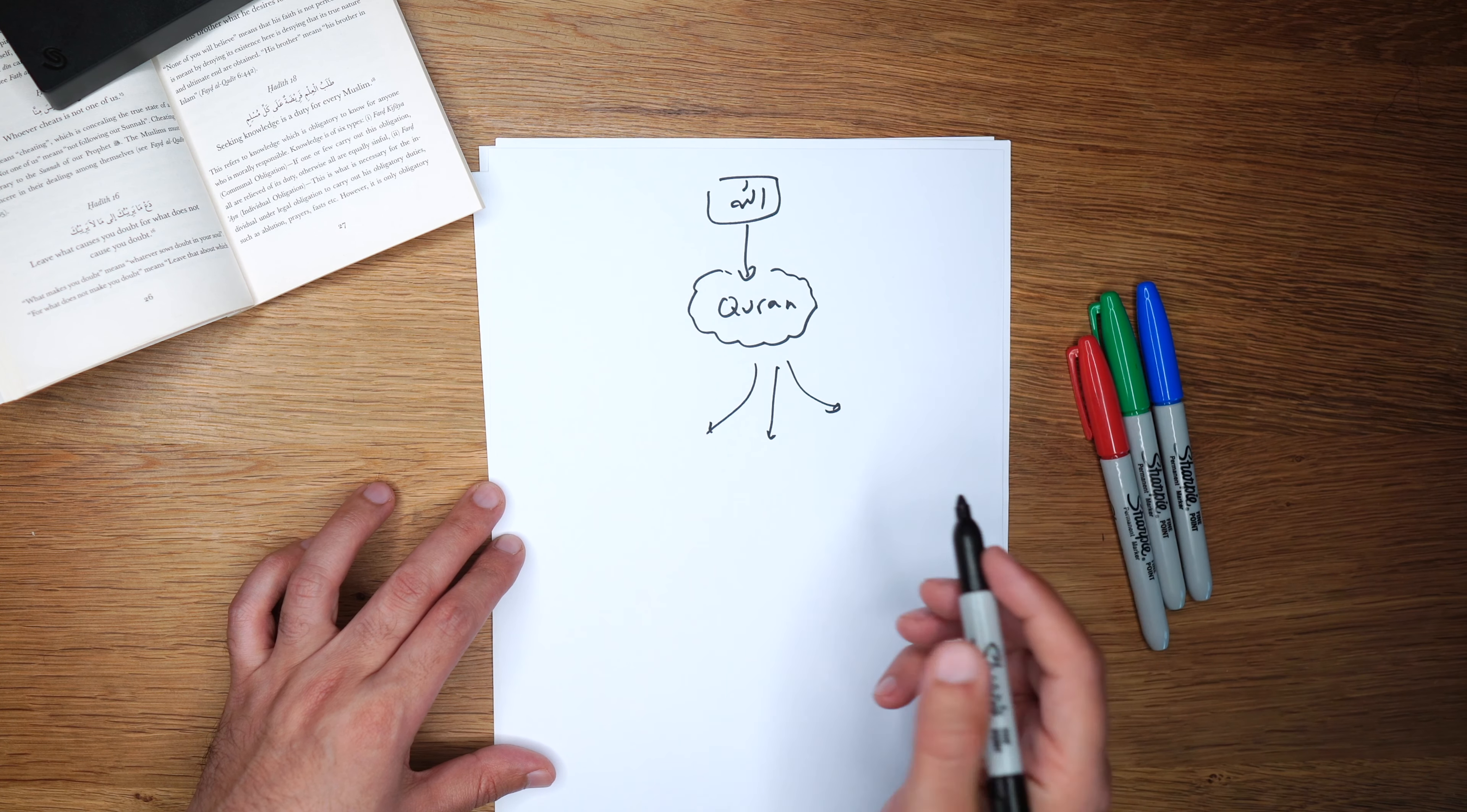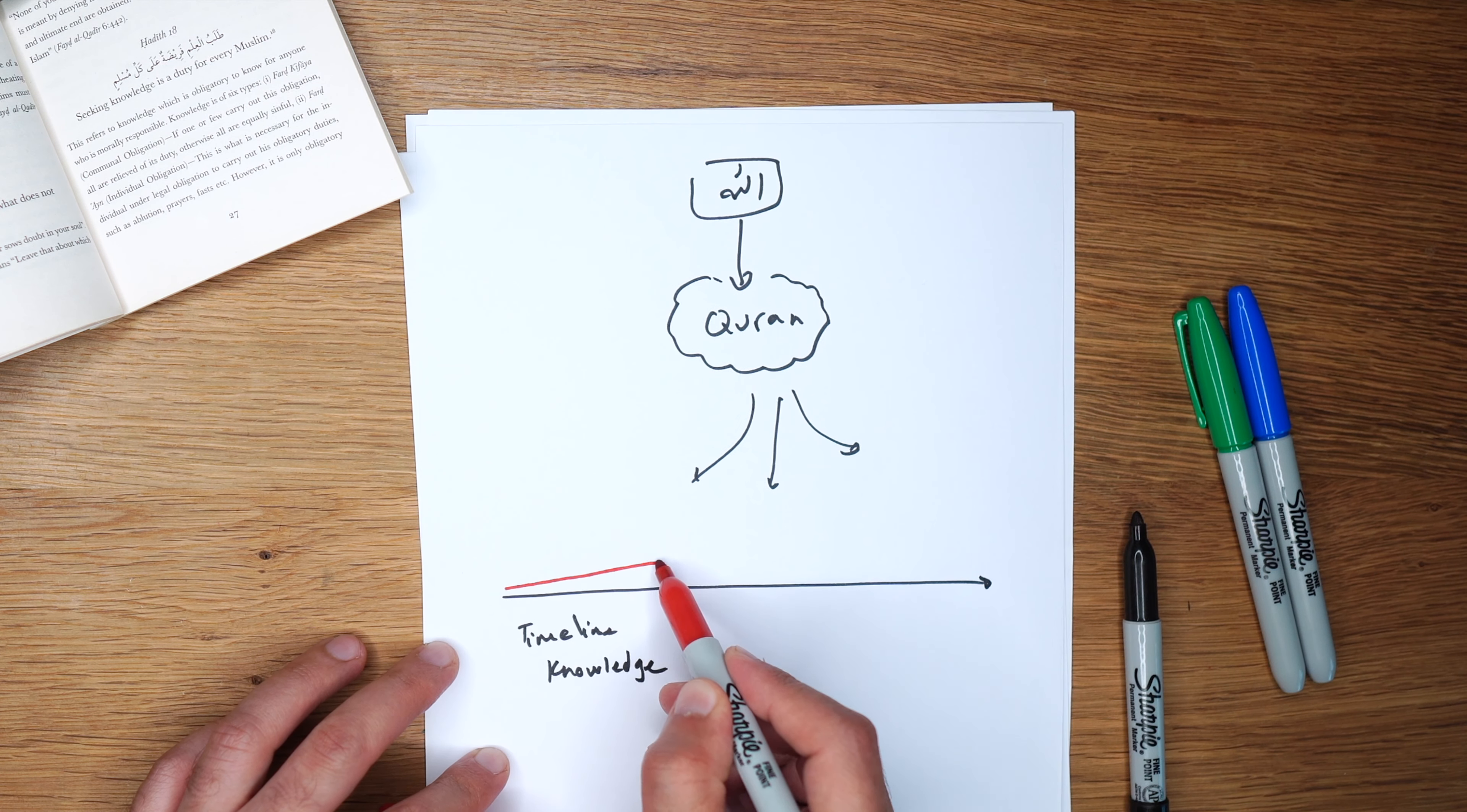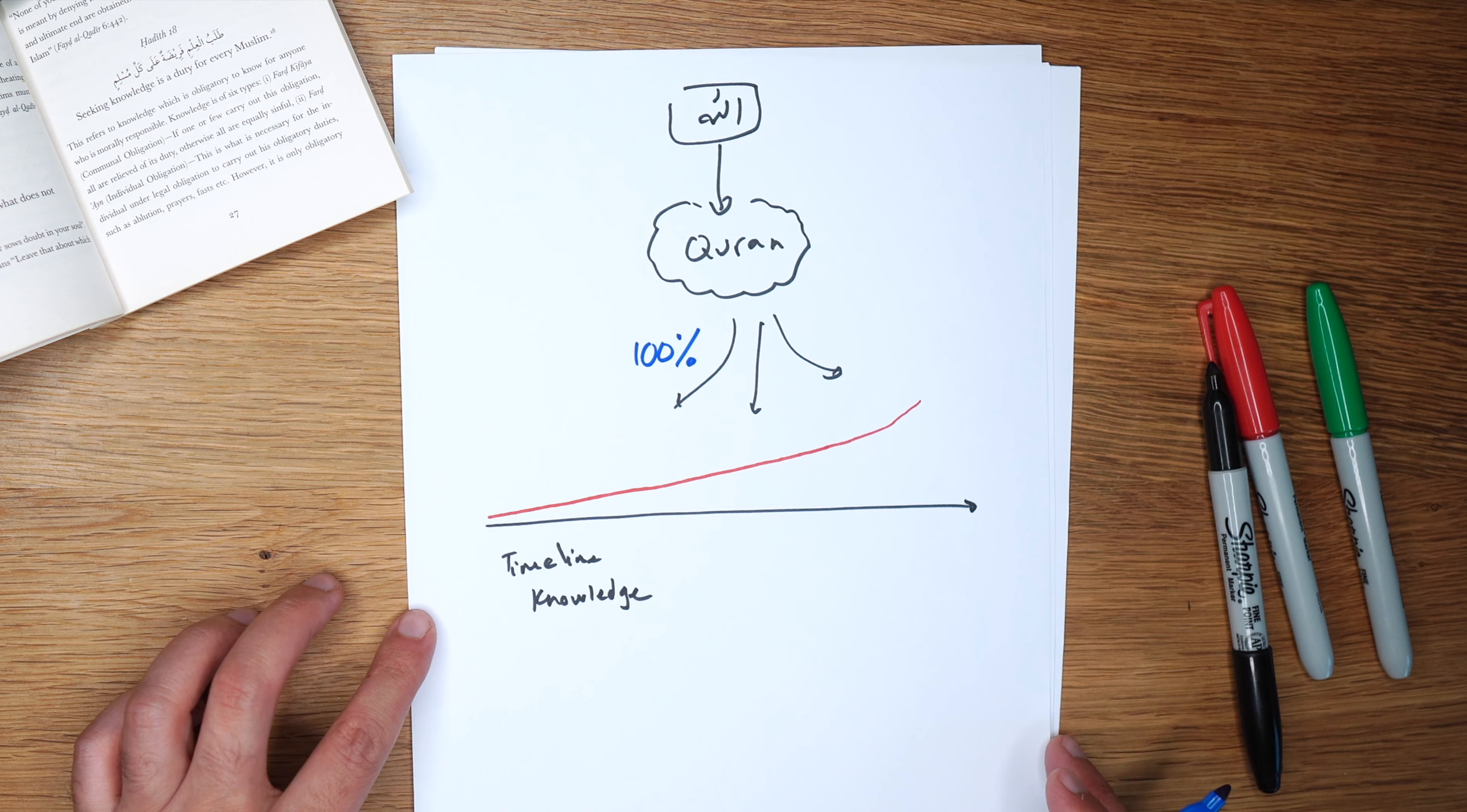Mankind in society has always developed themselves with knowledge. Knowledge naturally increases over time. Imagine this is a timeline: in the beginning you have little knowledge and then it increases. But the Quran's knowledge was actually all complete when it was revealed. The Quran's knowledge was 100% complete when the Prophet received the entire Quran. This is why Allah says in the Quran: today we have completed for you your faith.